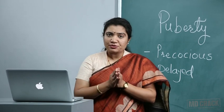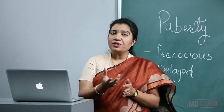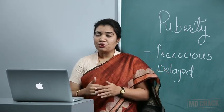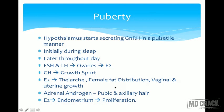GnRH secreted from the hypothalamus acts on the pituitary, which then secretes FSH and LH. FSH acts on the granulosa cells of the ovary, stimulating estrogen secretion. Once estrogen is present, the whole cycle begins — FSH, LH, ovarian estrogen, and growth hormone, leading to the growth spurt as the first step toward maturity.